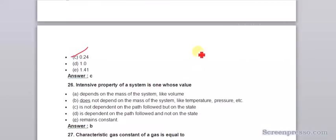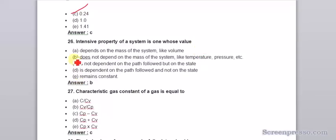The intensive property of a system is one whose value does not depend on the mass of the system like temperature and pressure. There are two types of properties: intensive and extensive. Properties which depend on the mass are extensive property, and which do not depend are intensive property.